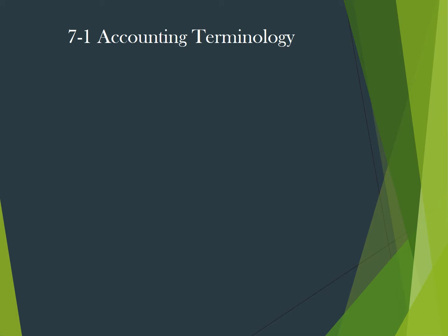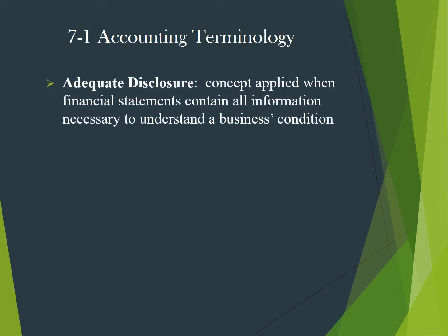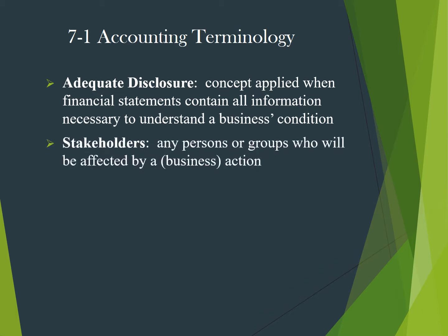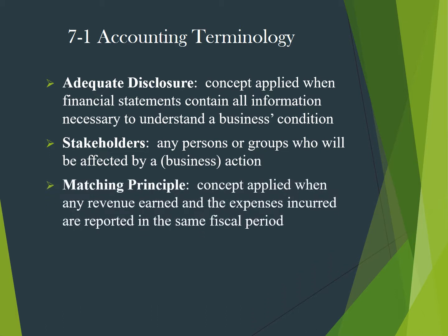Chapter 7-1 Accounting Terminology. One of our first accounting principles that we will study is adequate disclosure. Adequate disclosure is a concept that is applied when financial statements contain all information necessary to understand a business's condition. Stakeholders are a little bit different than stockholders — stakeholders is any person or group of people who will be affected by a business action. Another accounting concept is the matching principle, which we have already studied. It is a concept applied when any revenue earned and the expenses incurred are reported in the same fiscal period.